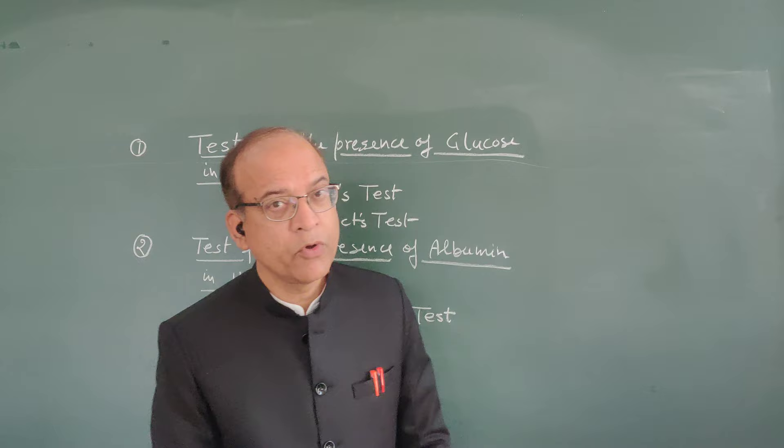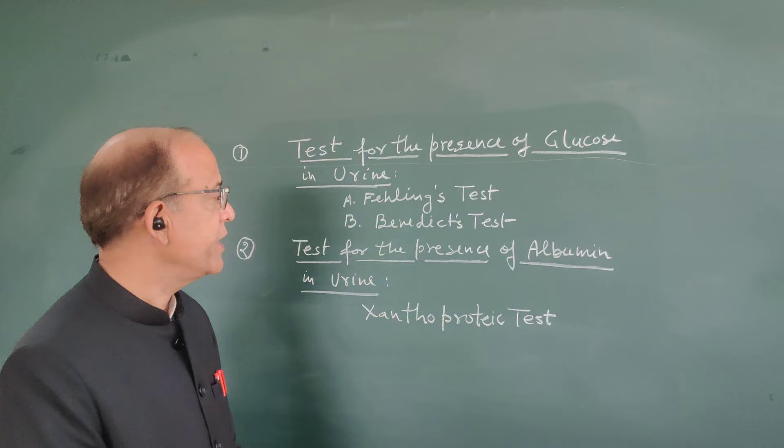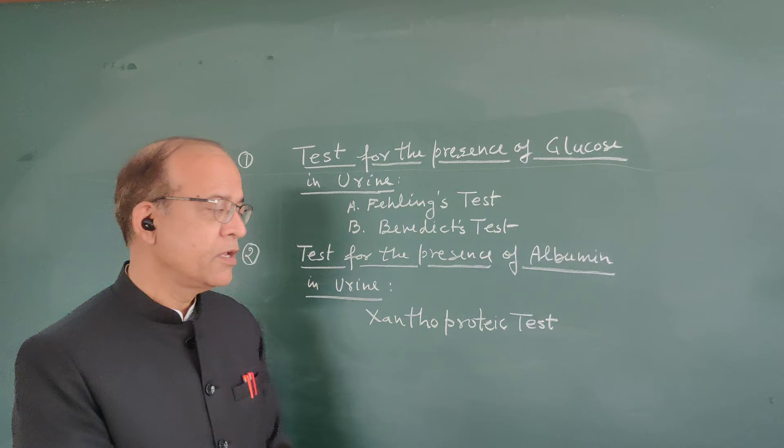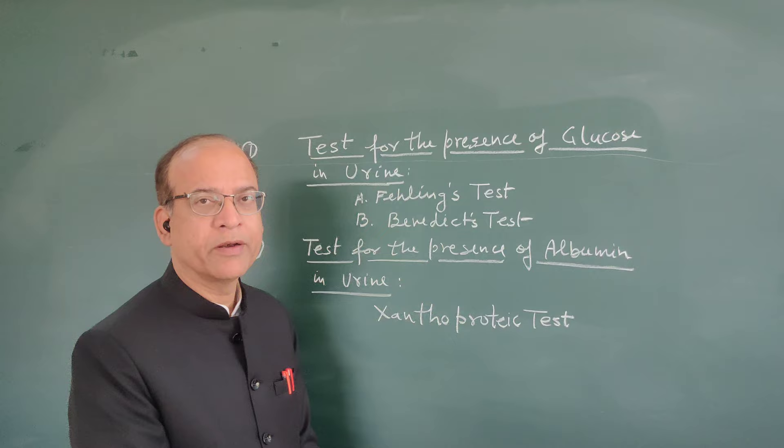Hello viewers. Today in this video I am going to show you the test for the presence of glucose in urine. We will test the presence of glucose in urine by two tests: one is Fehling's test and another is Benedict's test. Then we will have another test for the presence of albumin protein in urine, and for that purpose we will have the xanthoproteic test.